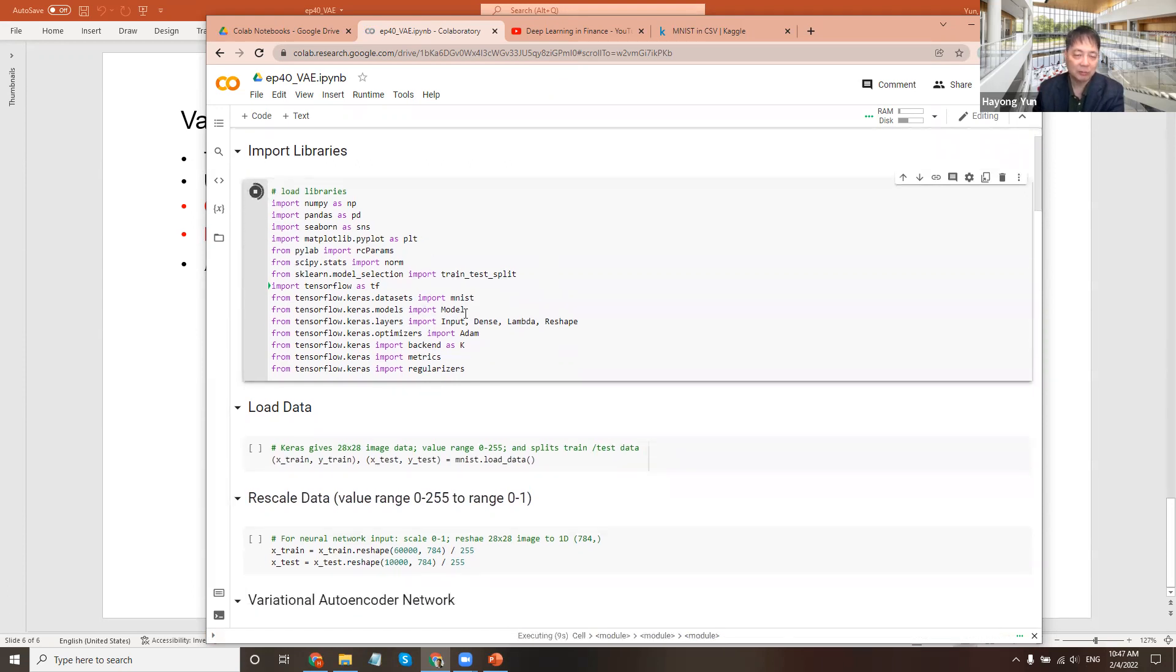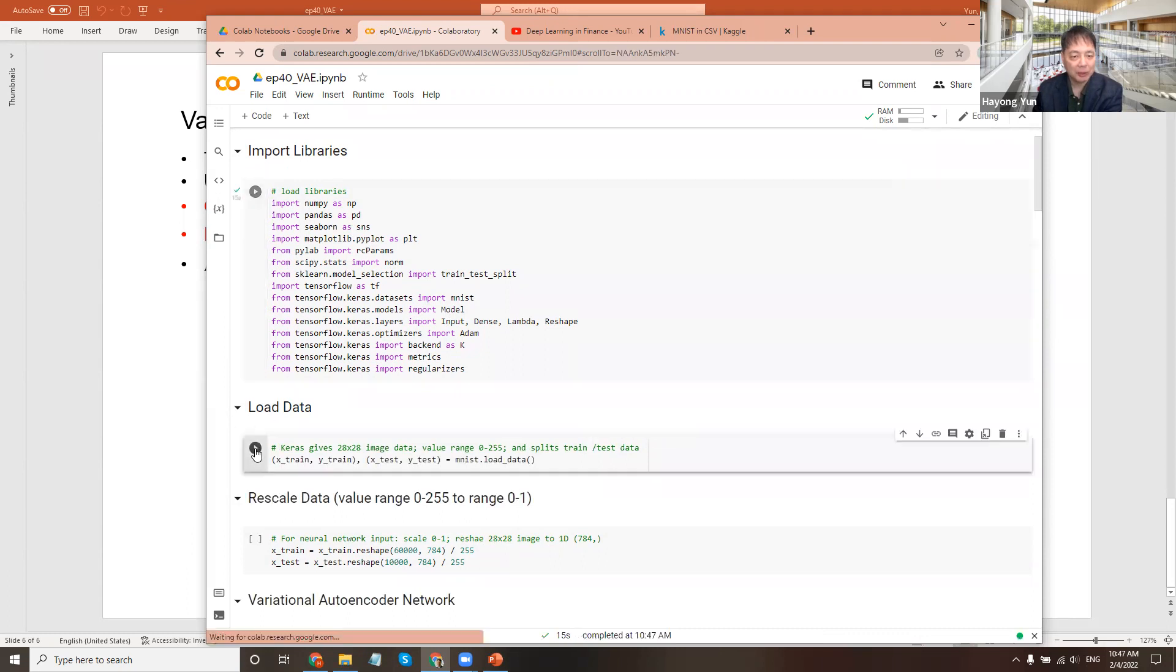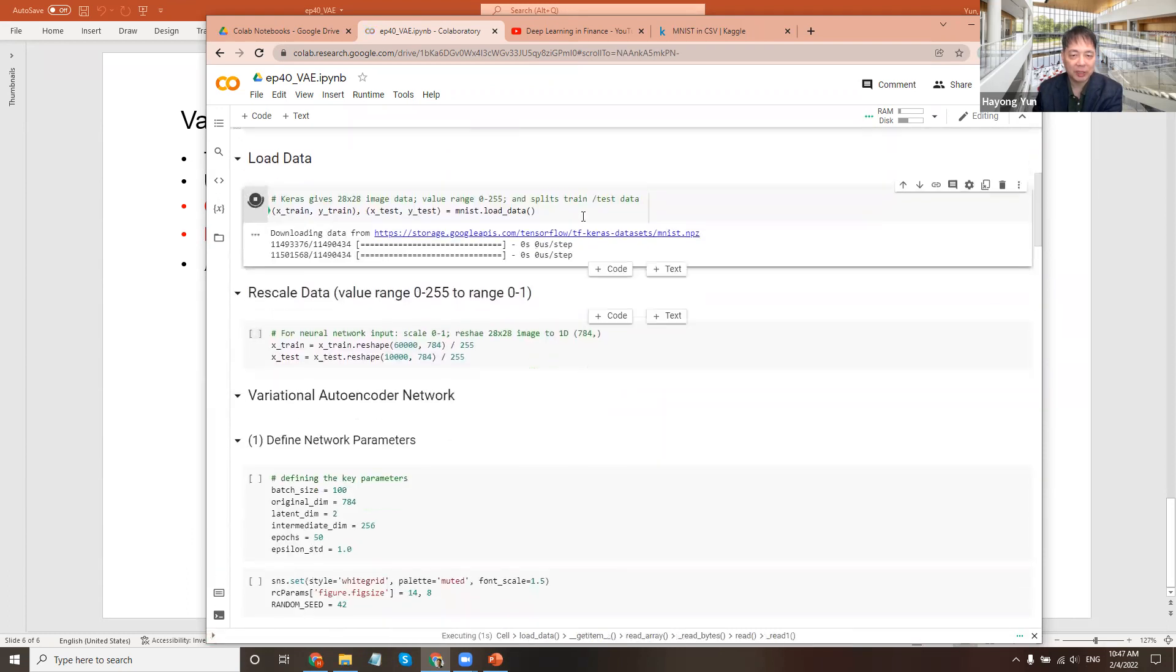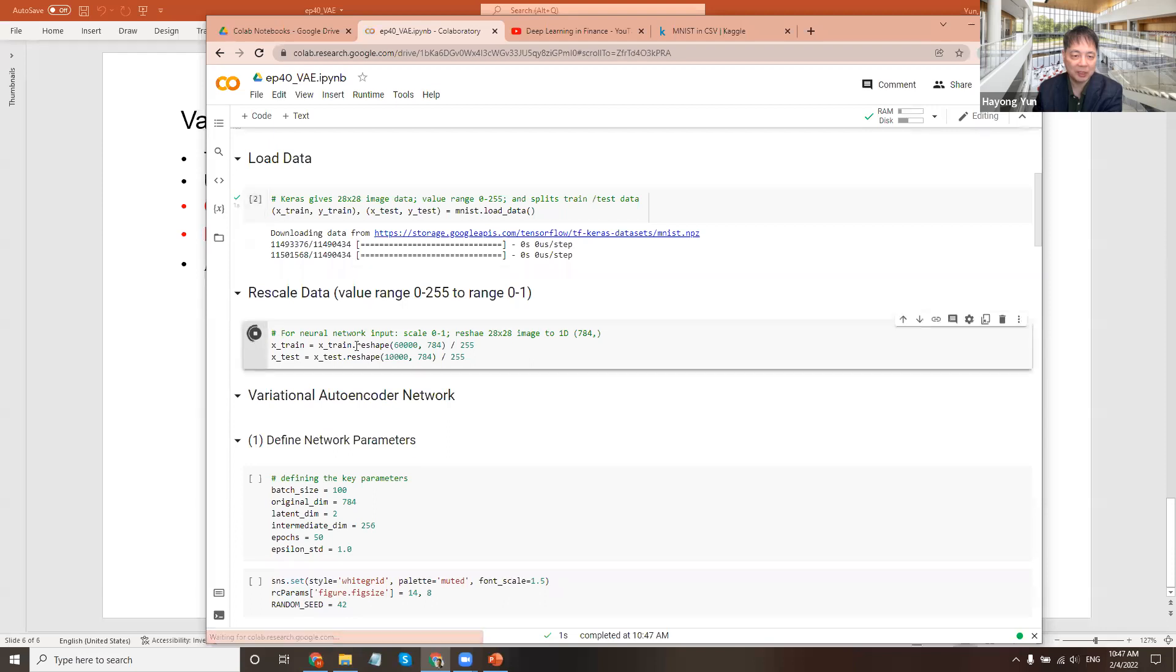The beginning part is the same as before, so let's just quickly pass by. Loading the library, load the data directly from Keras provided MNIST, and we scale it.